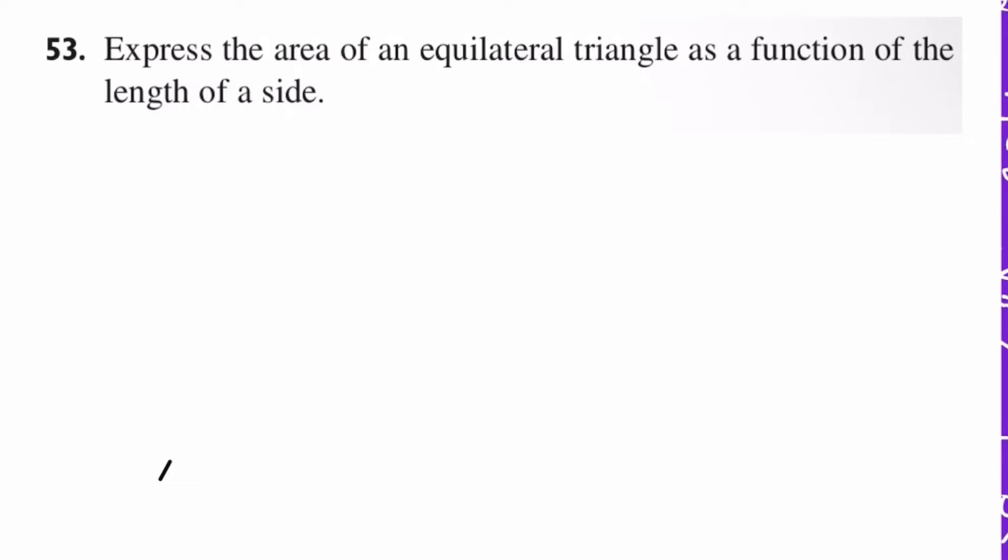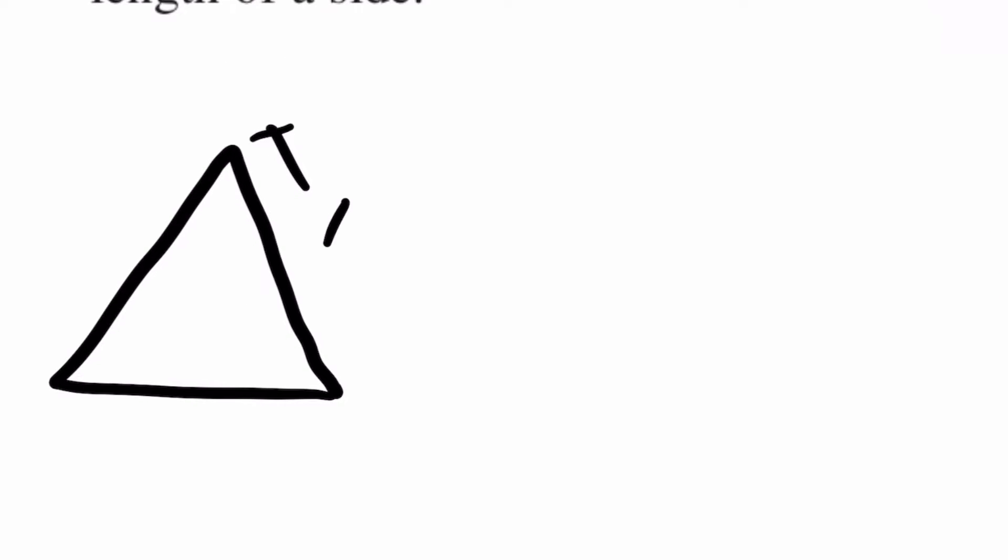First we need to know what is an equilateral triangle. This is the one that all of its sides are the same measure. You can call it whatever you want. I'm going to call it X. So the first side is X, the second one is X, and the other one is X because it's an equilateral. All of its sides are the same.